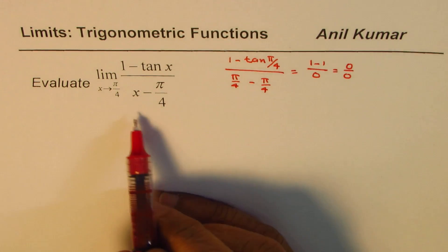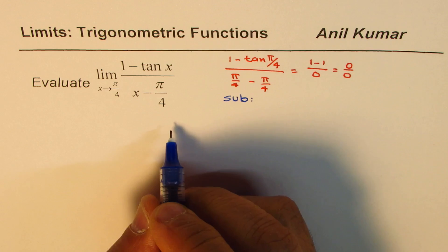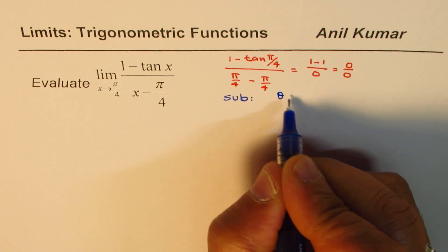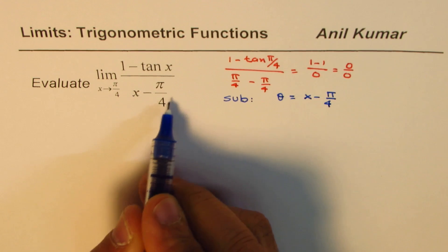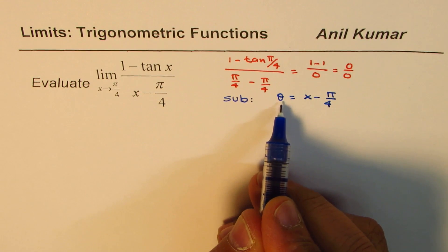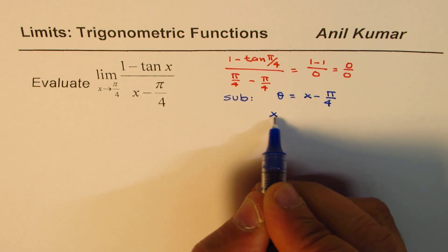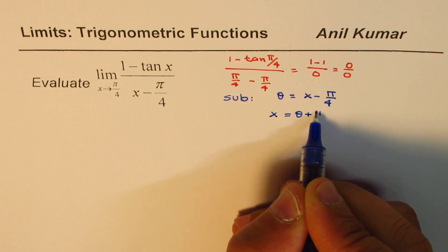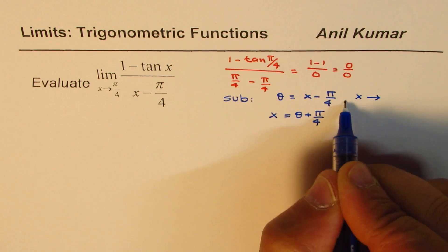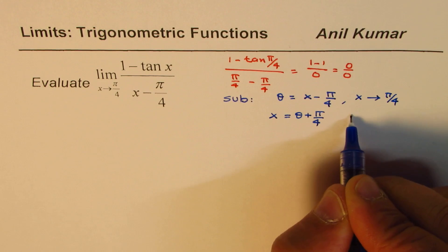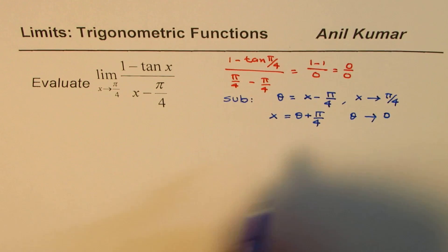To begin with, let's make a substitution. Let θ = x - π/4, so the denominator becomes θ. In that case, x = θ + π/4. We also need to update the limit: as x approaches π/4, θ approaches π/4 - π/4, which is 0.